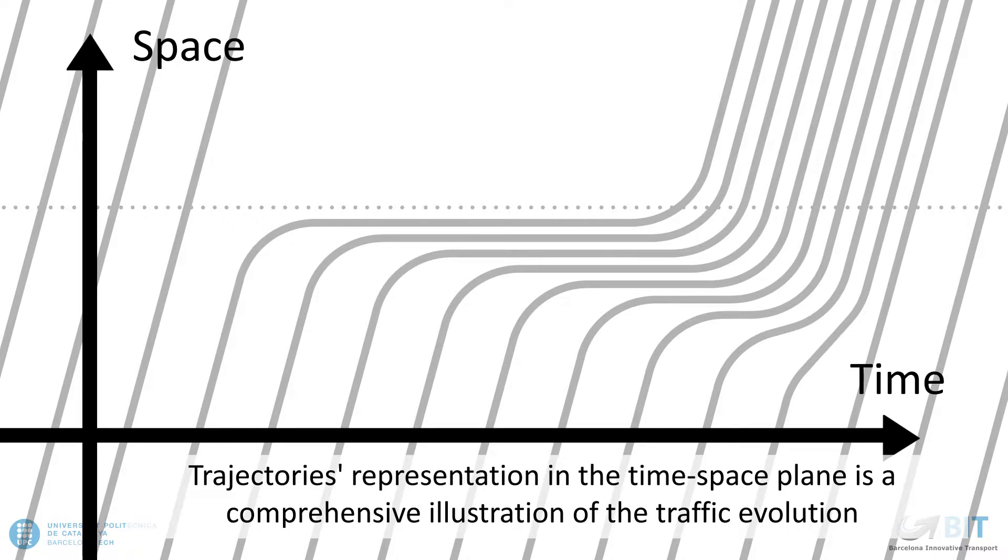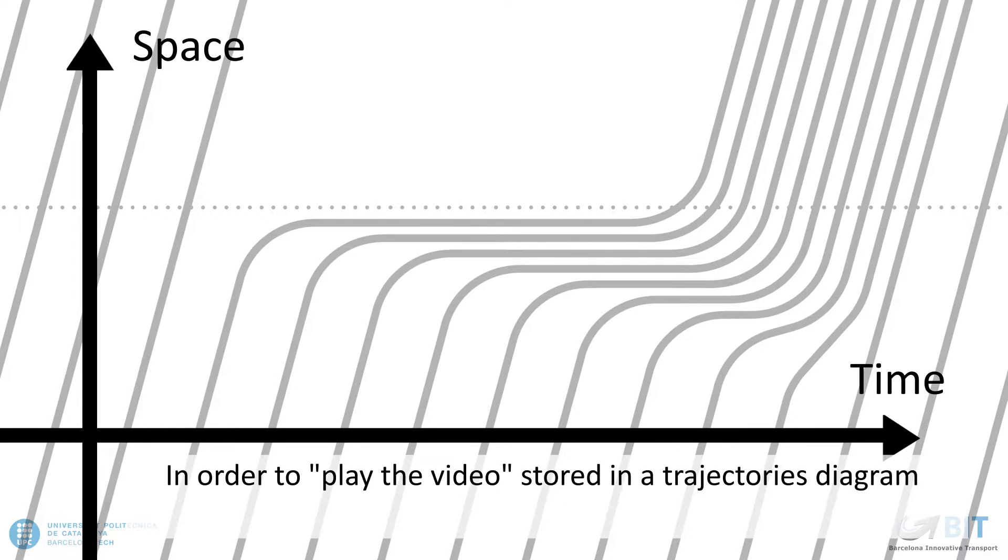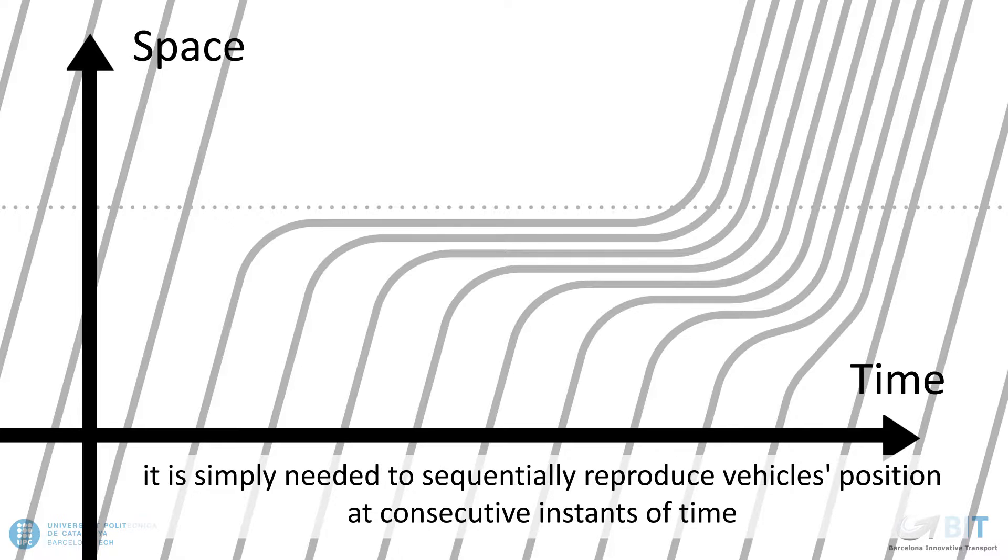Trajectories representation in the time-space plane is a comprehensive illustration of the traffic evolution, and can be thought of being equivalent to a video recording of the episode. In order to play the video stored in a trajectories diagram, it is simply needed to sequentially reproduce vehicles' position at consecutive instants of time.